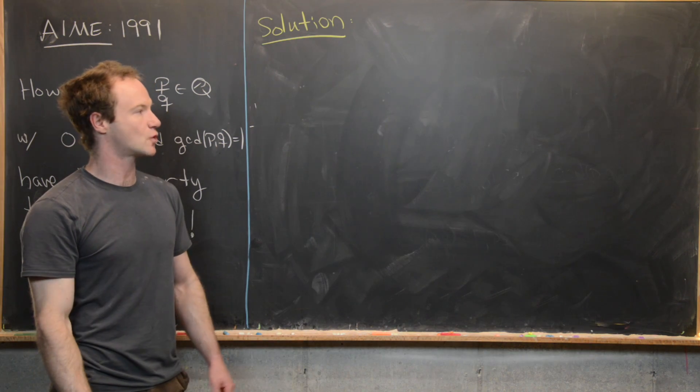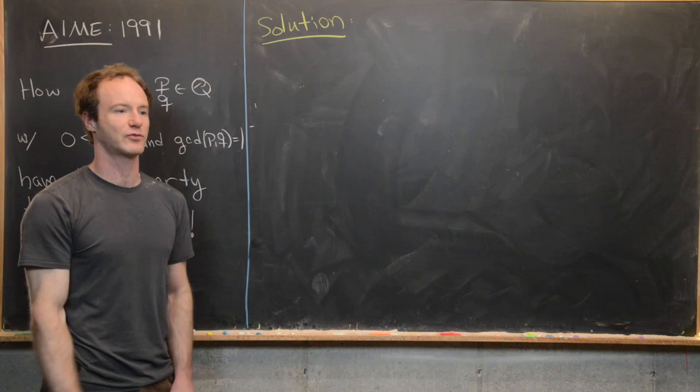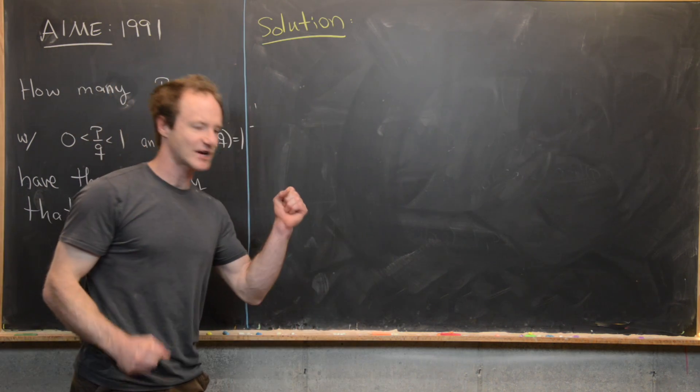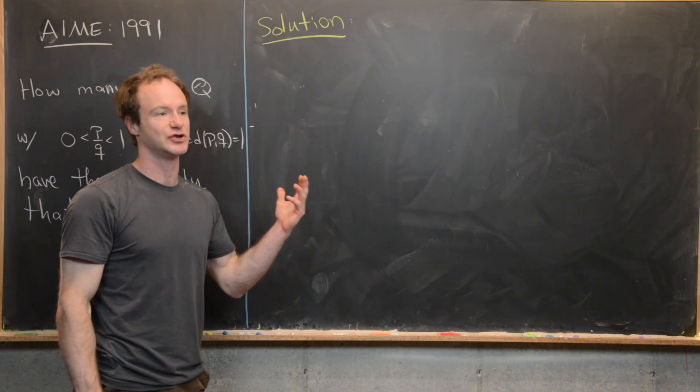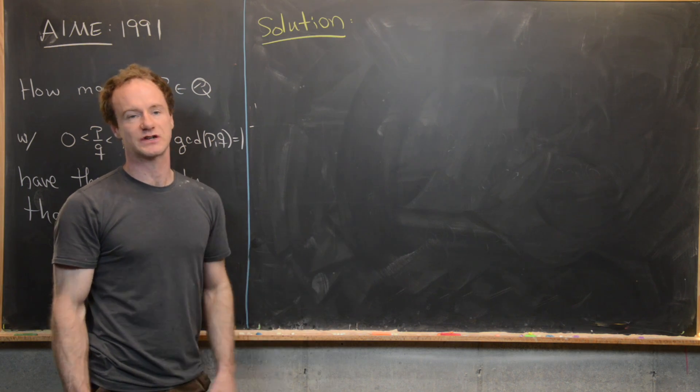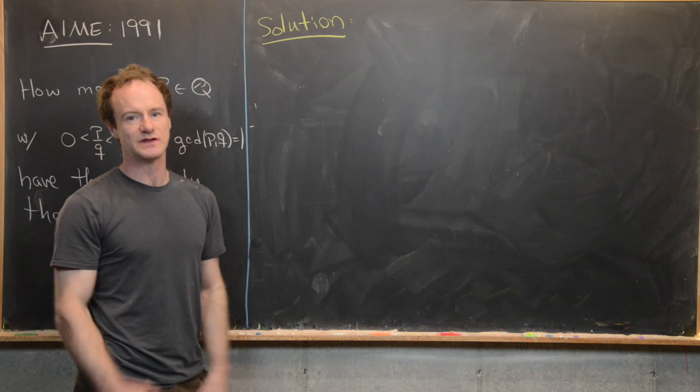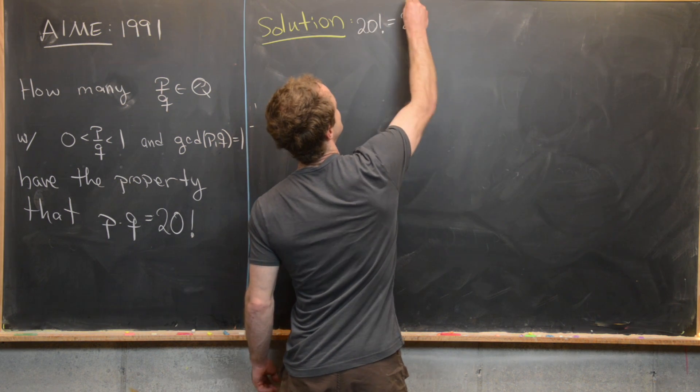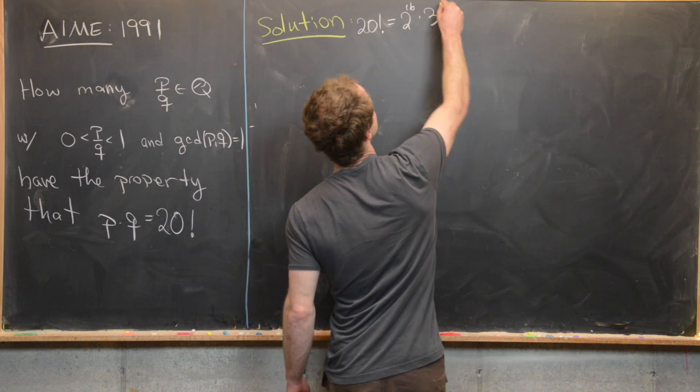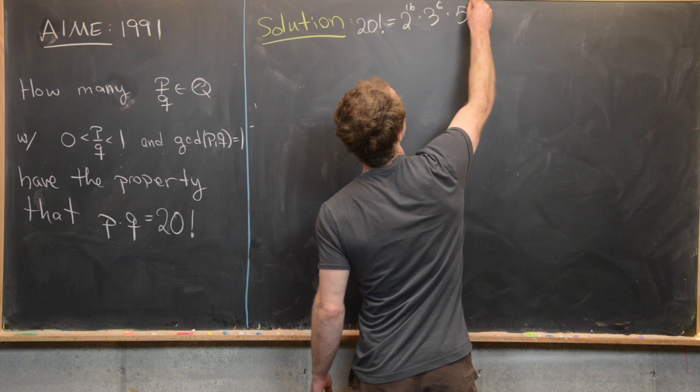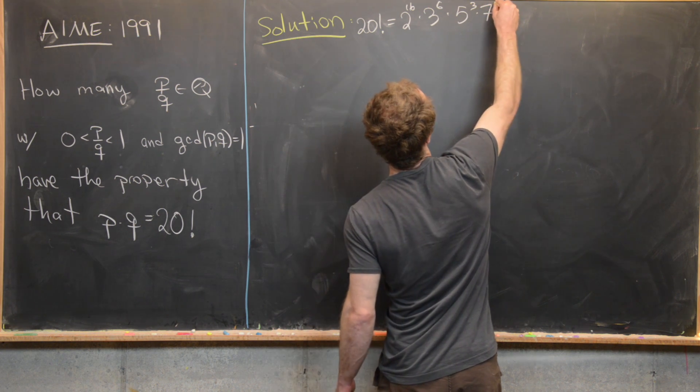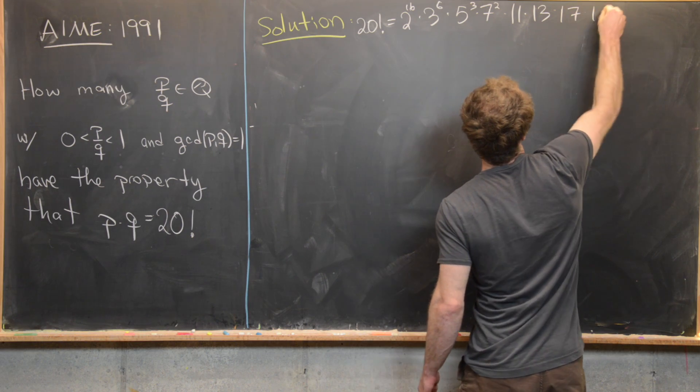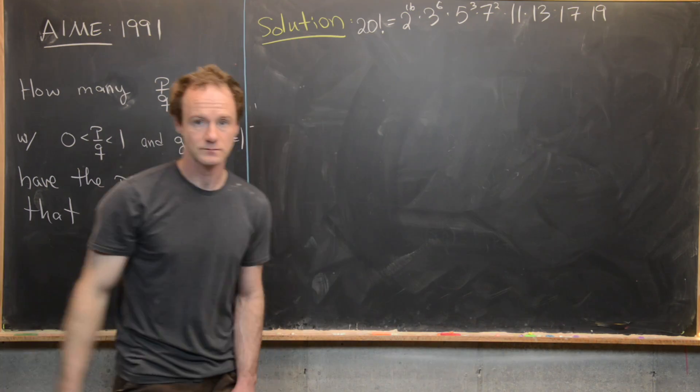To get started, we're going to take 20 factorial and write it as a product of primes with the appropriate exponents. We don't actually need to know the exponents to create a correct solution to this problem, but I'll include them for thoroughness. So 20 factorial equals 2 to the 16 times 3 to the 6 times 5 cubed times 7 squared times 11 times 13 times 17 times 19.